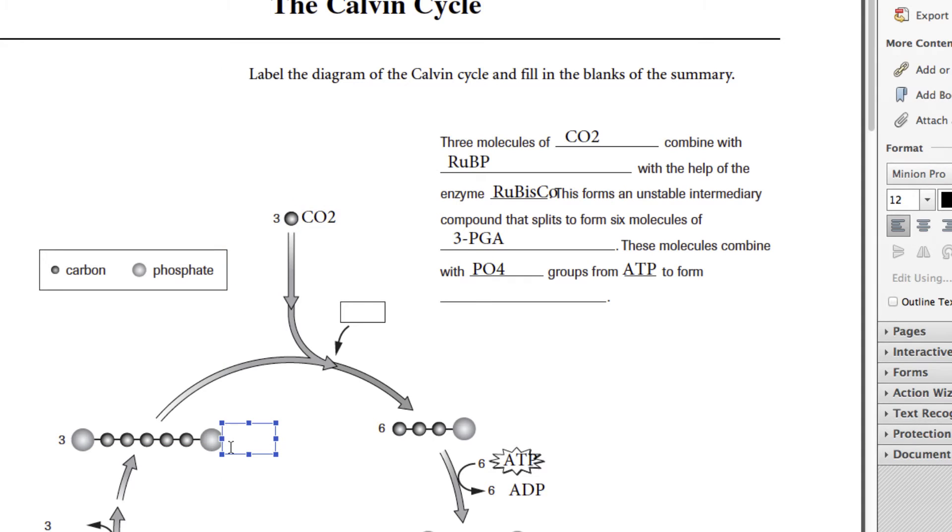This molecule over here is the RuBP, ribulose bisphosphate. And then this is the enzyme that aids, which is Rubisco. What this ends up forming is 1,3-BPG. The numbers indicate the carbons. If you remember when we built the carbons a while ago in lab, that's what it refers to. So 1,3-BPG stands for 1,3-bisphosphoglycerate.